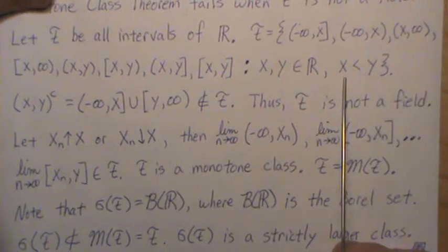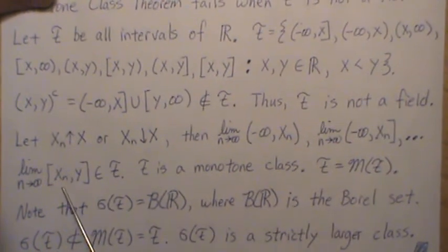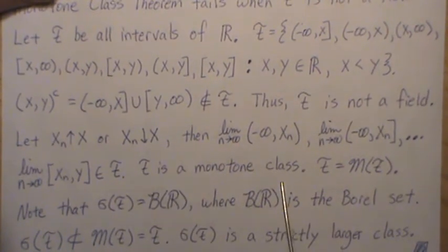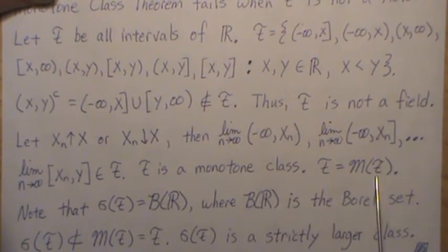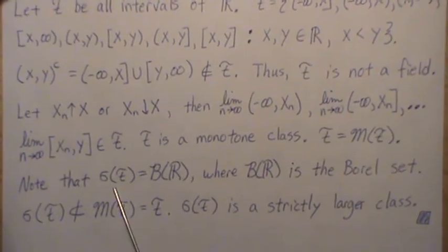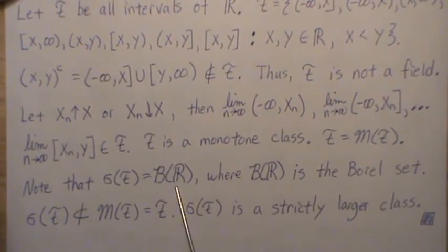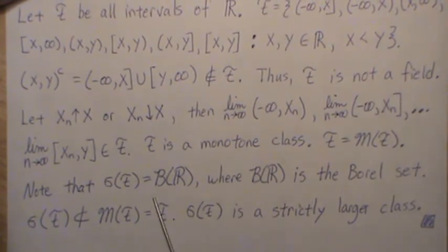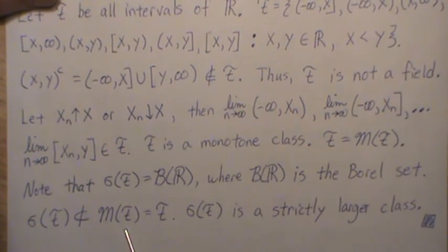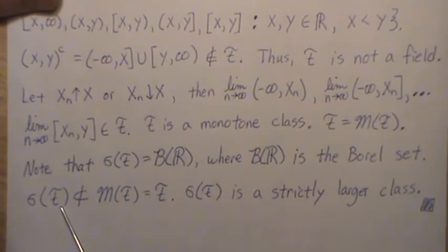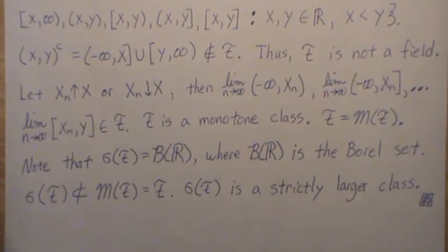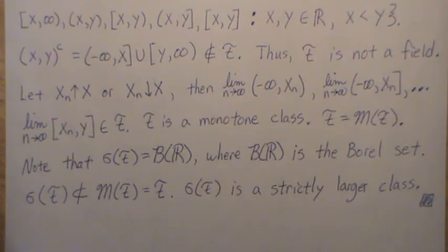Since we require x < y, none of these limit sets collapse to a point, so all limits remain intervals in F. Therefore F is a monotone class, and M(F) = F. But the minimum sigma field generated by F is the Borel sets ℬ(ℝ), which is clearly not a subset of F. The sigma field generated by F is a strictly larger class, so the Monotone Class Theorem fails.